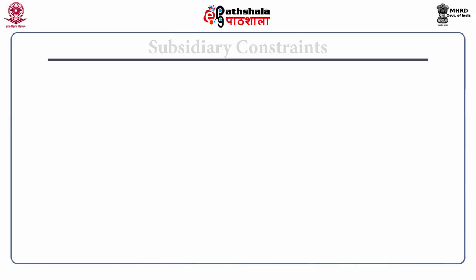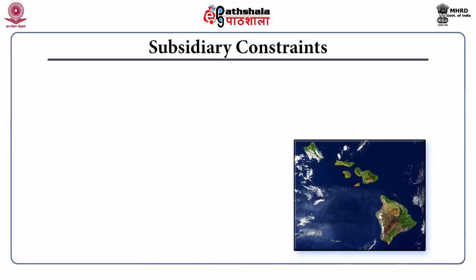The performance of a subsidiary is marred by several constraints. At the time of evaluating the true performance of a subsidiary, these constraints have to be considered. A poorly laid assessment mechanism could prove fatal for the future success of the organization. These constraints include variance in mechanisms regarding reporting of performance data. Each country has its own inclusions or exclusions when it comes to reporting of data, so it becomes important to scrutinize the performance data as per the requirement of the organization. The second constraint is a volatile international environment, which hampers the performance of a subsidiary.